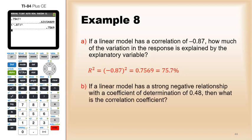On the other hand, if a linear model has a strong negative relationship, and that's going to be important. This is saying the correlation is negative. We know the coefficient determination is 0.48, so what is the correlation coefficient? Well, if you know r squared is 0.48, you can find the correlation by taking the square root and I get 0.693.